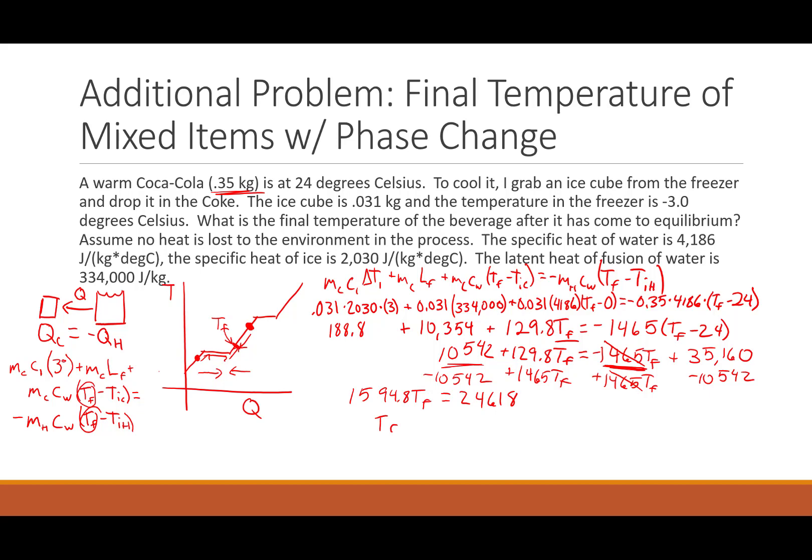And then T final, we just divide both sides out by 1594.8. So we get 24,618 divided by 1594.8 equals 15.4 degrees Celsius. So that's that. It's really not that crazy to set up. We just have to start out with the heat gained by one object is the opposite of the heat of the other object, and plug in all the heats required, or the equations. And then the rest is simply algebra. Hope that was helpful.